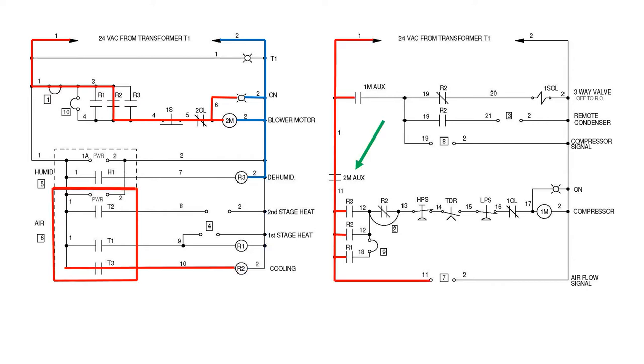A 24 volt contact on the blower contactor, here labeled 2MAUX, is now closed, providing power to additional points in the system.